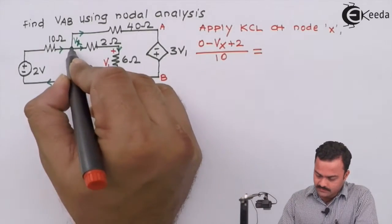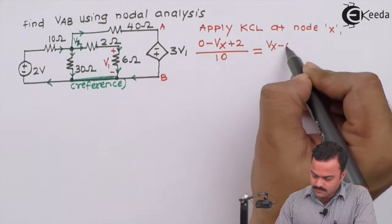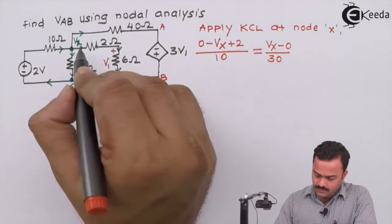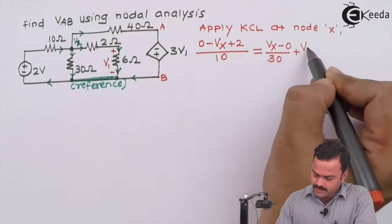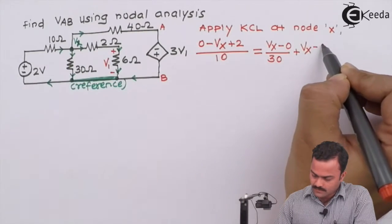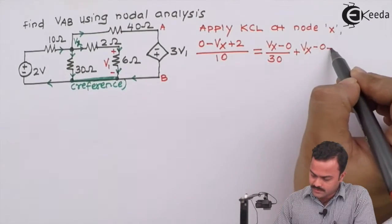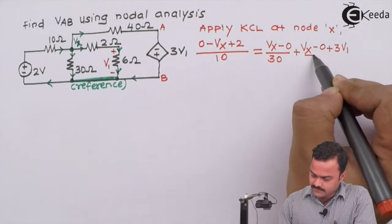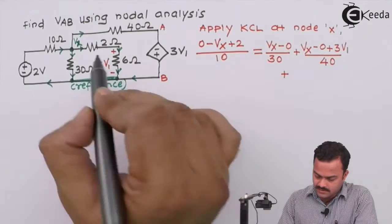Let's write the equation for all outgoing currents. Let's start for this. So it is started with Vx ending on reference and the resistance is 30 Ohm. This is started at Vx ending on reference. But in the current direction, minus 2 plus voltage source. That means the voltage rise and the value is 3V1. Resistance is 40.